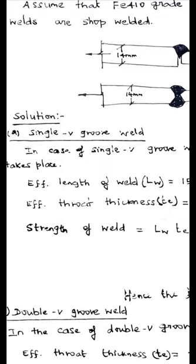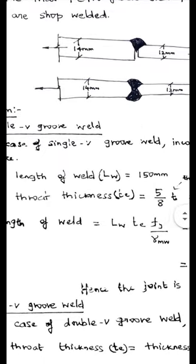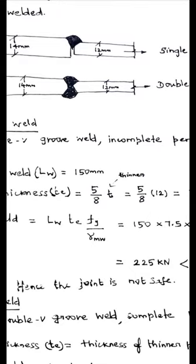Then next we have to calculate the effective throat thickness, T. Effective throat thickness is equal to 5 by 8 times thickness. This is not given in the code, this is the general rule, you have to memorize this one.